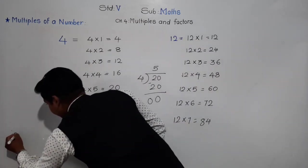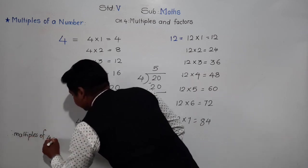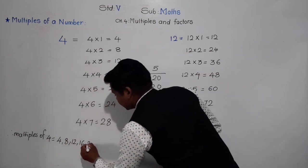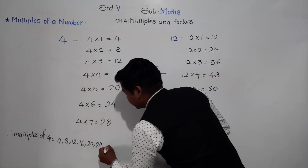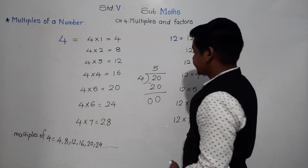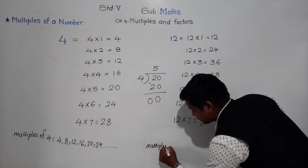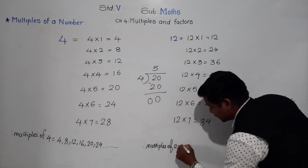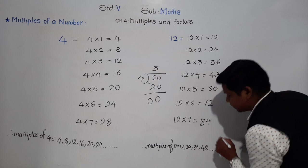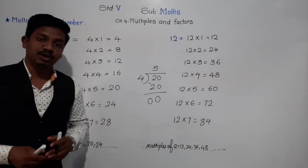Write in your notebook: multiples of 4 are 4, 8, 12, 16, 20, 24 and so on (dot dot dot means to be continued). Similarly, multiples of 12 are 12, 24, 36, 48 and so on. After writing this, we will solve practice 4.1.